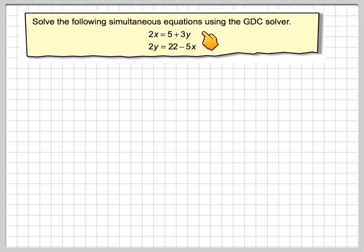Solve the following simultaneous equation using the GDC solver. We've got 2x equals 5 plus 3y, and 2y equals 22 minus 5x.